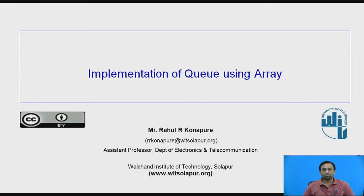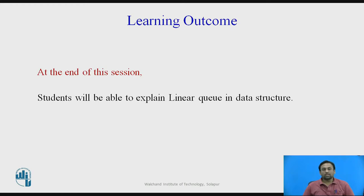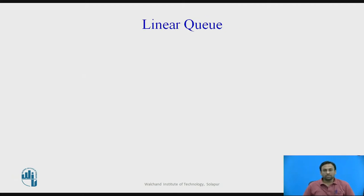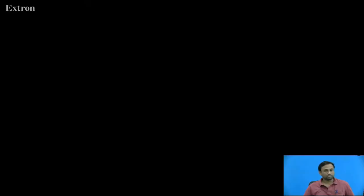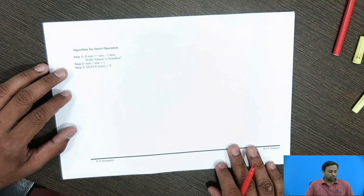This lecture is on the implementation of queue using an array. The learning outcome is that at the end of this session, students will be able to explain a linear queue in data structures. As seen in the previous lecture, the queue follows the first-in-first-out principle — a linear data structure. Data is added from the rear end and deleted from the front end, so we require two pointers: the rear pointer and the front pointer. Now we will see the implementation of queue using C language.